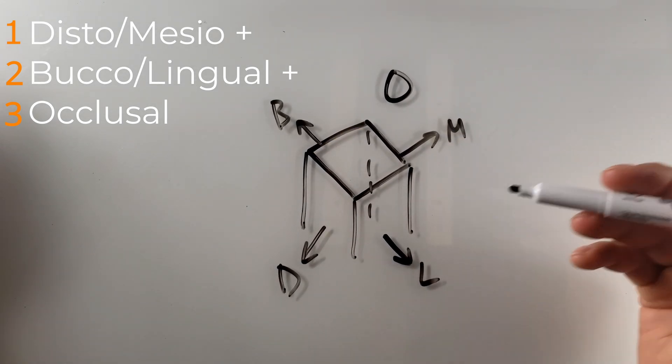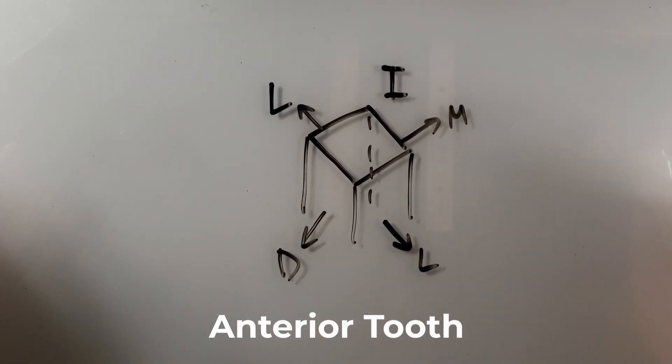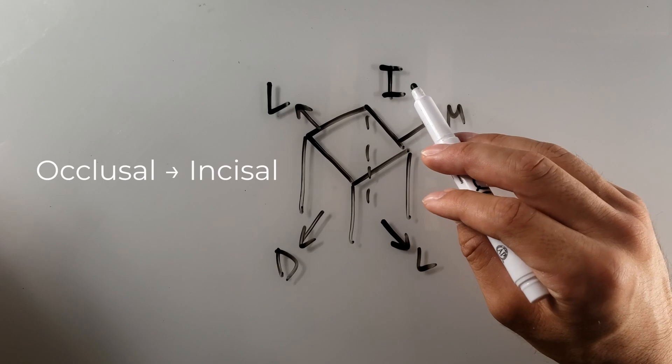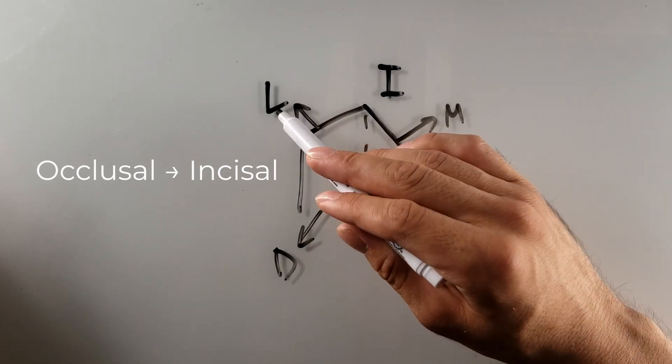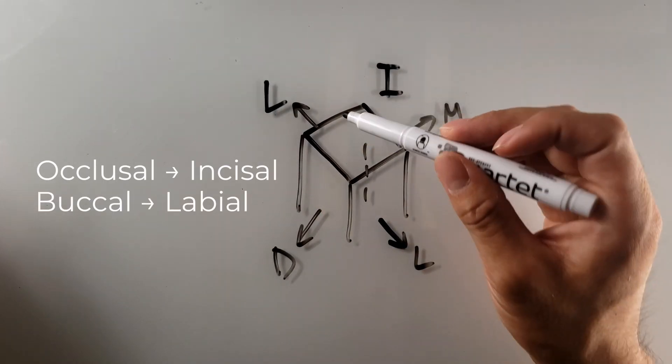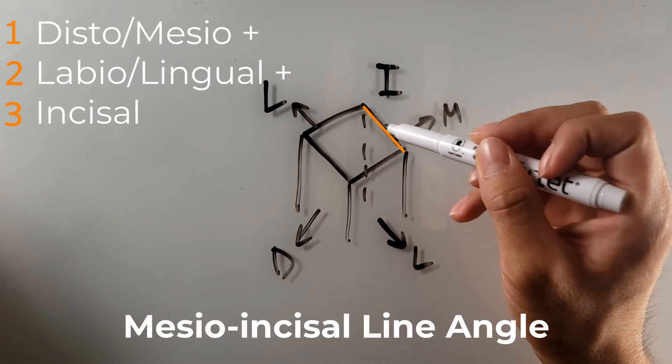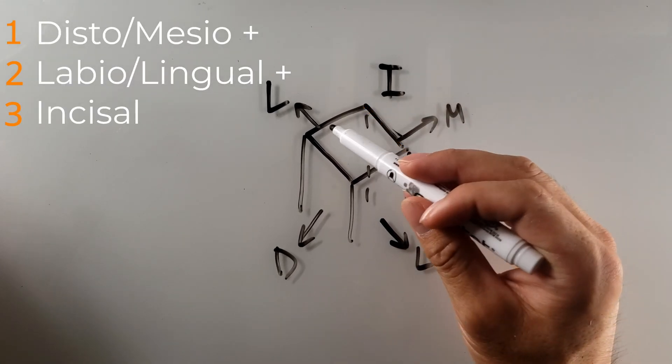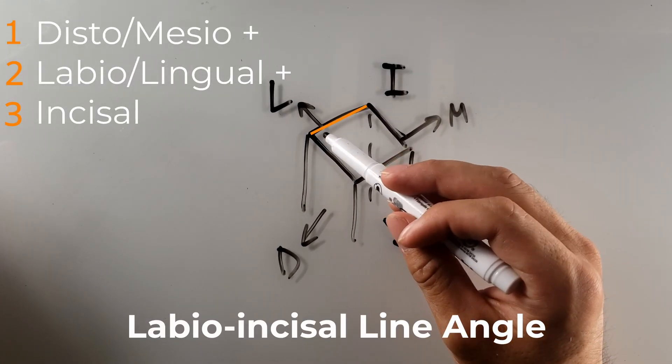Now what if it was an anterior tooth? So now when we're thinking of an anterior tooth, instead of the occlusal, we're thinking incisal. Instead of buccal, we're thinking labial for lips. So this portion would be the mesial-incisal line angle. This would be the labio-incisal line angle.